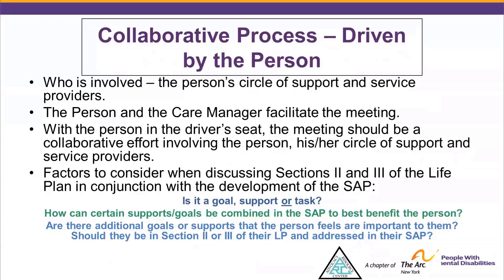An example of a support versus a goal could be: Support — 'I need assistance to ensure my oral hygiene is thoroughly completed.' Versus a goal — 'I want to learn how to independently complete my oral hygiene.' Next, how can certain supports or goals be combined in the Staff Action Plan to best benefit the person? For example, if the person has two supports assigned to the same habilitation provider — 'provide an exercise program' and 'assistance to make healthy food choices' under the Valued Outcome 'I want to maintain a healthy lifestyle' — the Staff Action area could incorporate both how staff will assist with food choices and how they support exercise.